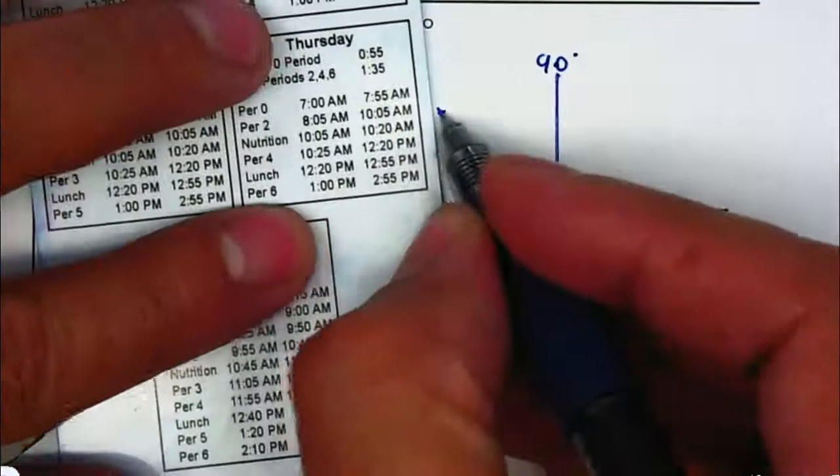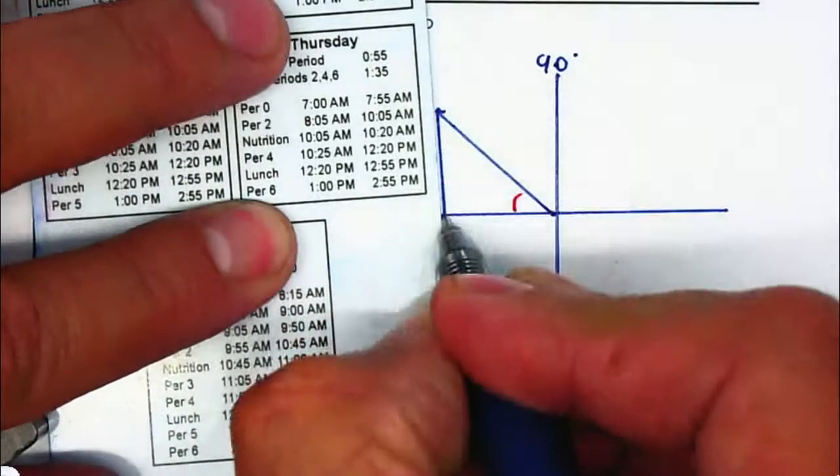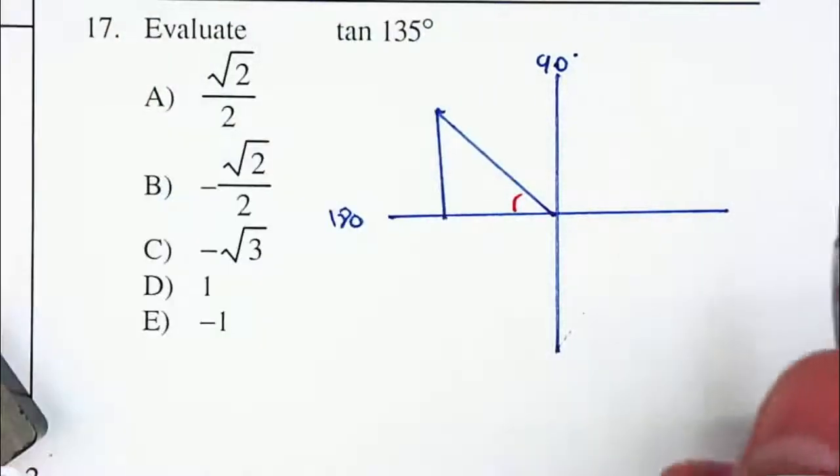I'm going to build my triangle so I'm going to place a perpendicular line towards the x axis.